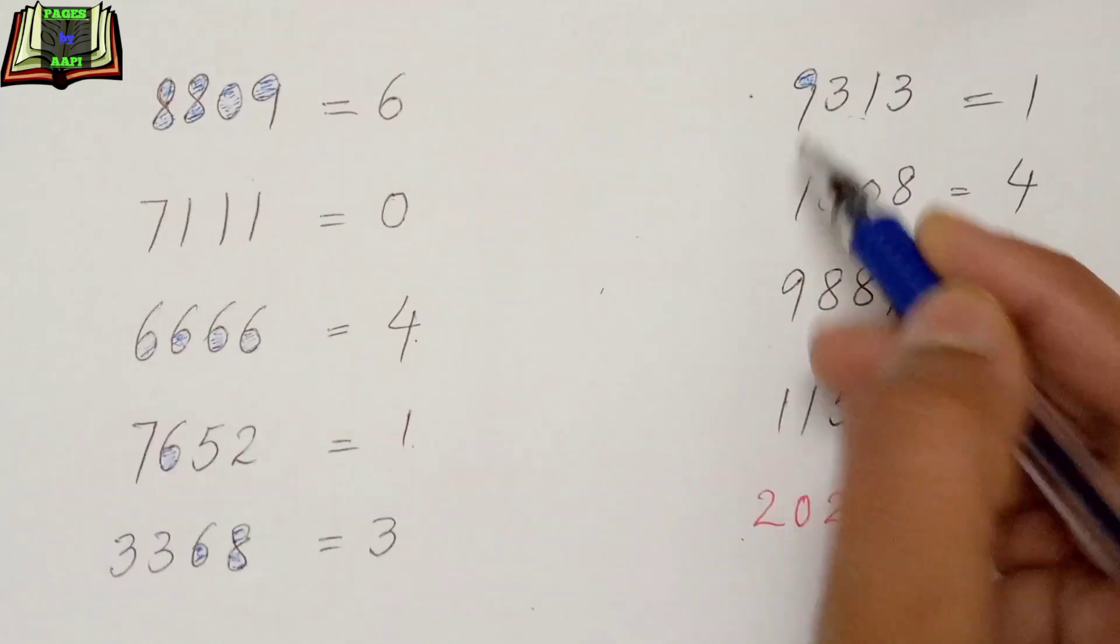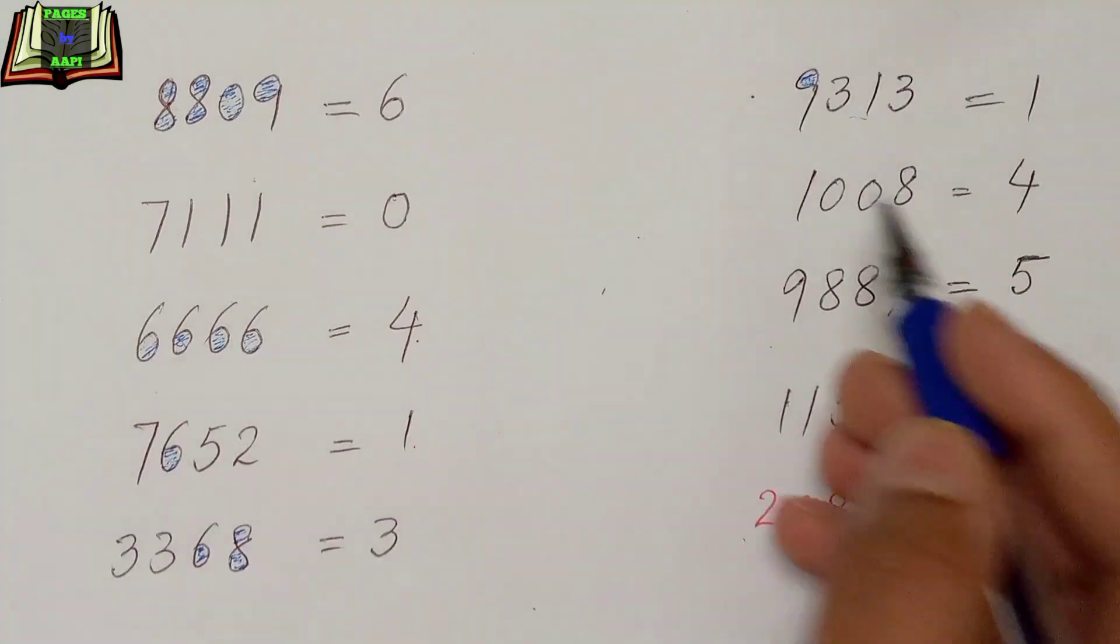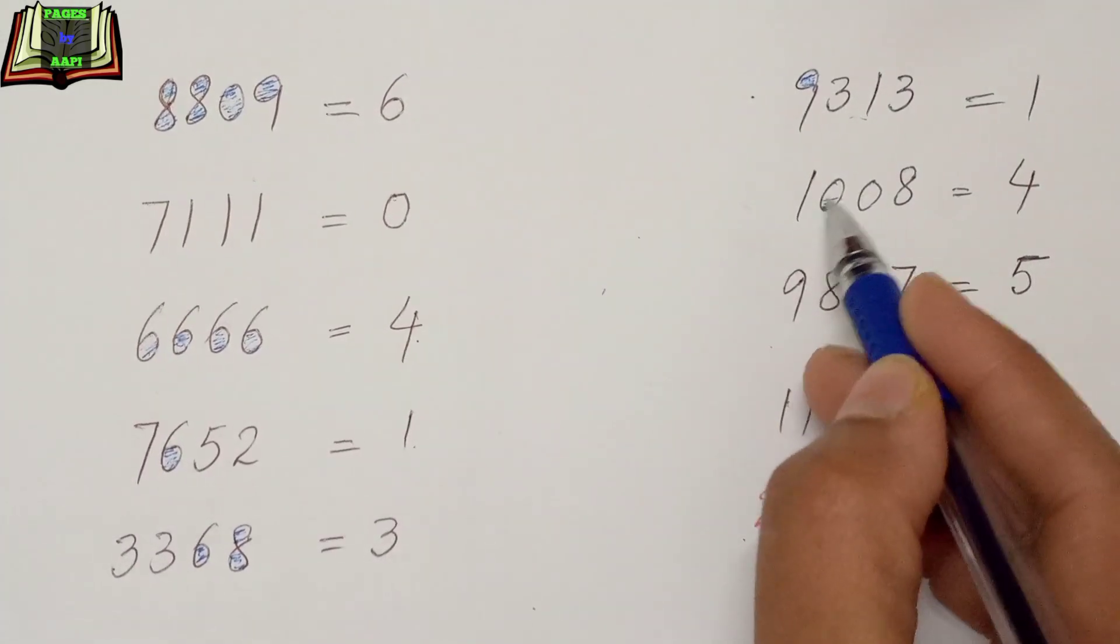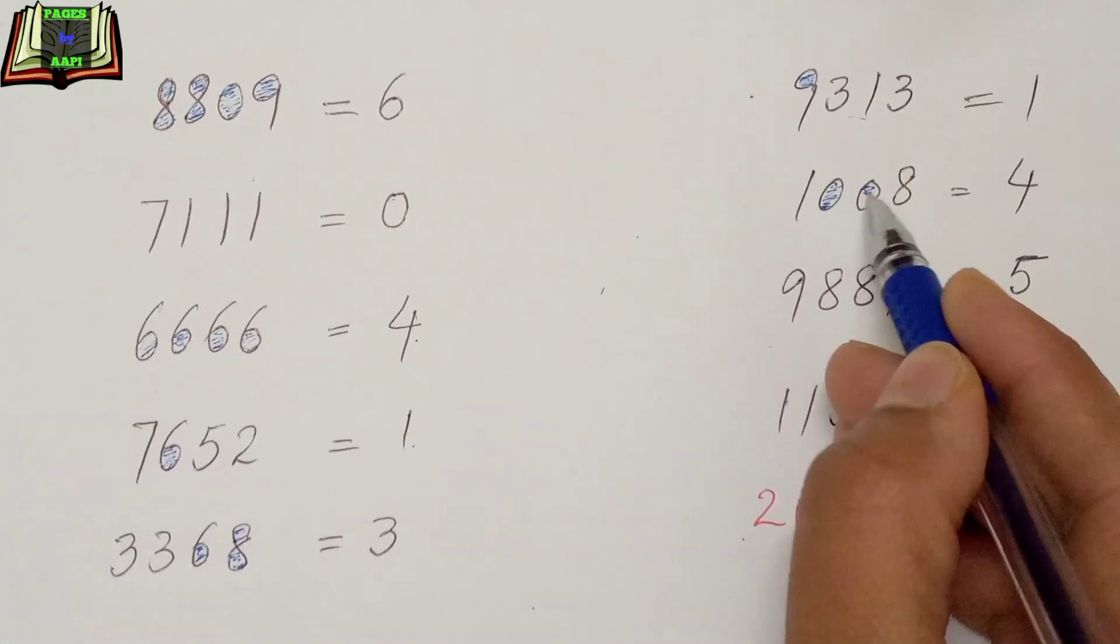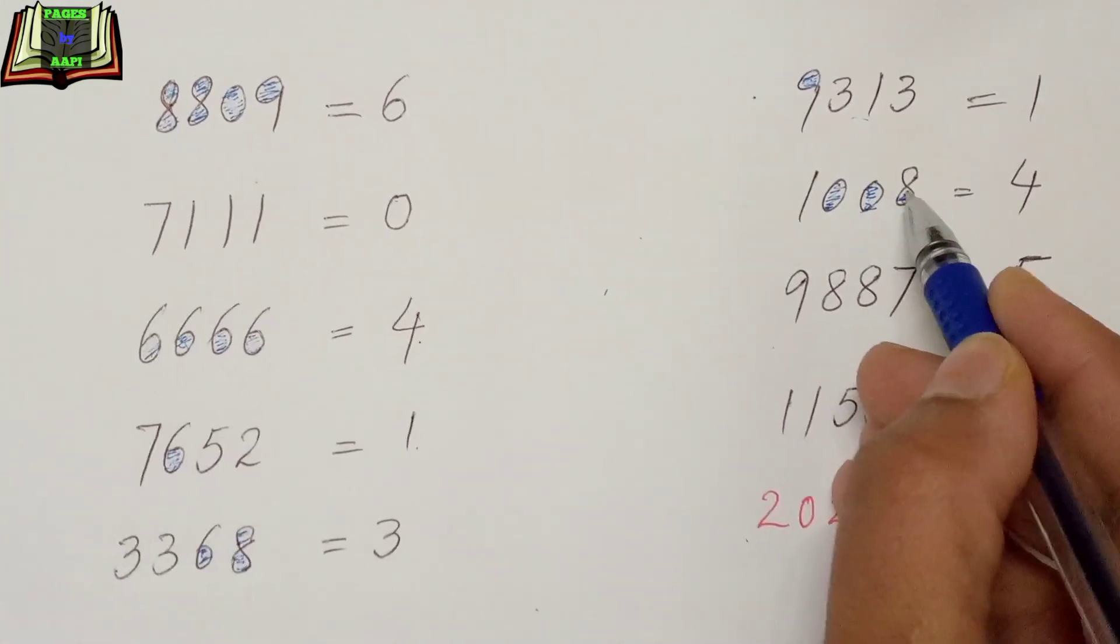In the next there is only one circle in it, that is why it's equal to 1. In 1008, there are 4 circles: 1, 2, 3, 4, that is why it's equal to 4.